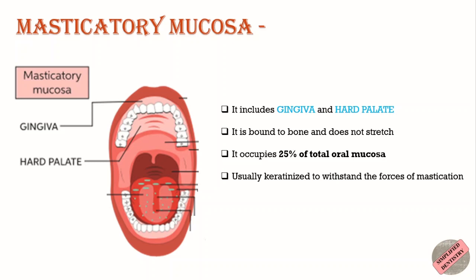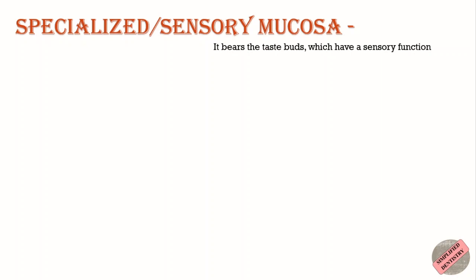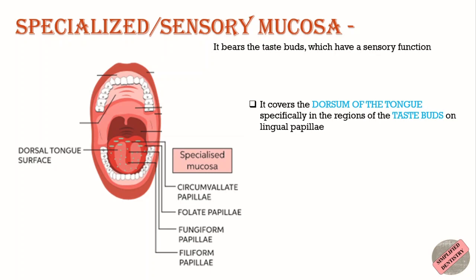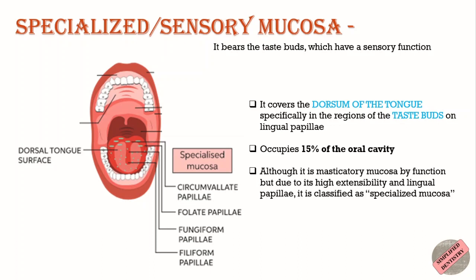Masticatory mucosa is usually keratinized to withstand the forces of mastication — that is, it bears the forces generated when food is chewed. Second is specialized mucosa, also known as sensory mucosa, as it bears the taste buds which have a sensory function. It covers the dorsum of the tongue, specifically in the regions of the taste buds on the lingual papillae. It occupies 15 percent of the oral cavity. Although it is masticatory mucosa by function, due to its high extensibility and lingual papillae, it is classified as specialized mucosa.